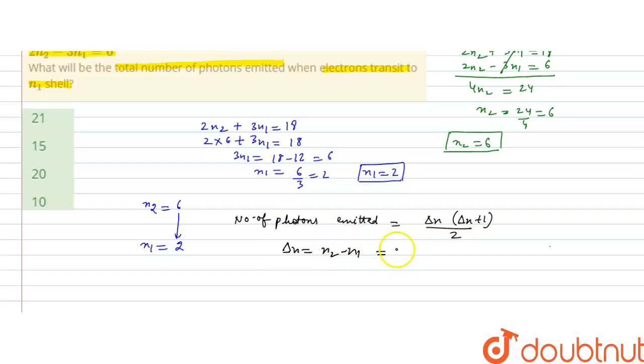Delta N will be N2 minus N1, that is 6 minus 2, that is equal to 4. The number of photons emitted will be...